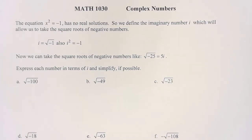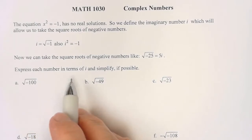Now we can take the square roots of negative numbers like square root of negative 25 would be 5i. We're going to express each number in terms of i and simplify if possible.